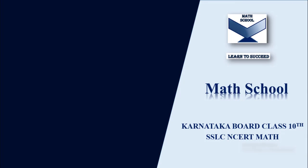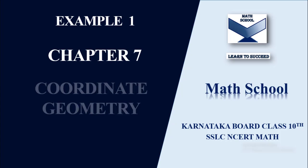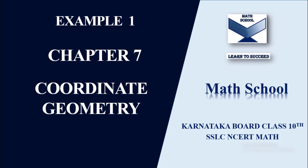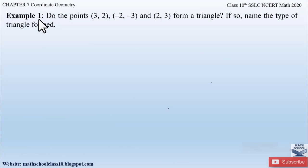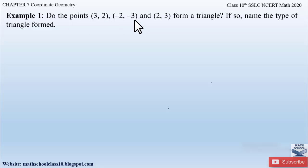Welcome back to my channel Math School. In today's video, let us solve Example 1 from Chapter 7 Coordinate Geometry. In my previous video I explained the distance formula fully. The problem says: do the points (3, 2), (−2, −3), and (2, 3) form a triangle?